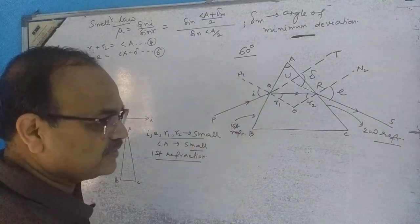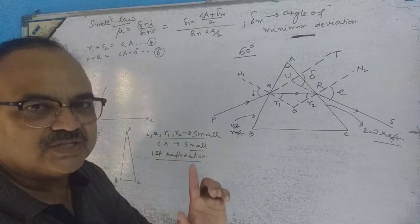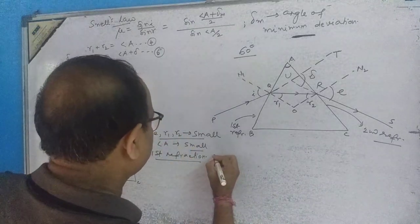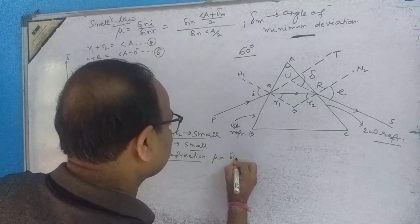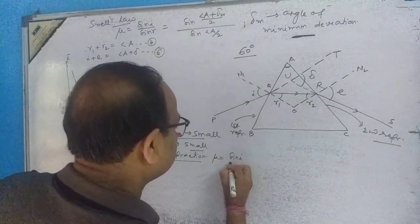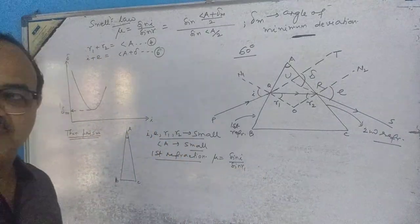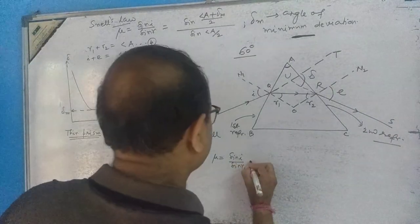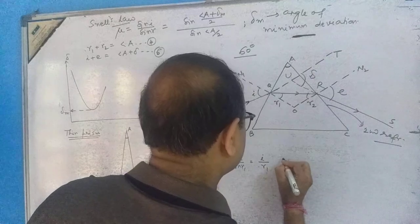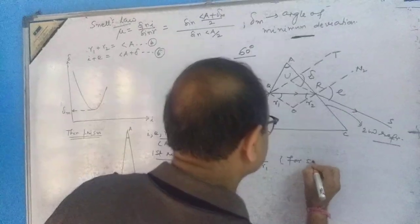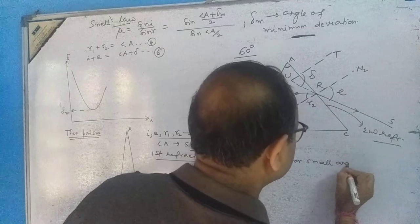Since i and e are very small, for the first refraction we can write: mu equals sine i divided by sine r1, which for small angles simplifies to just i divided by r1.